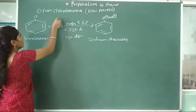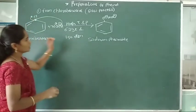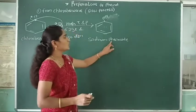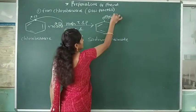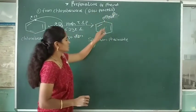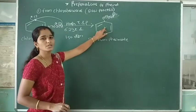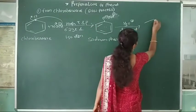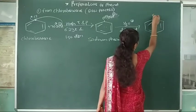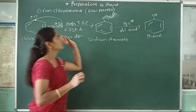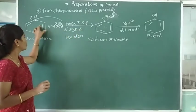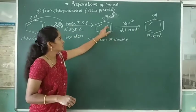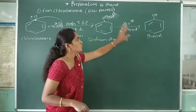The chlorine is replaced and sodium phenoxide (O⁻Na⁺) is formed. This sodium phenoxide is then hydrolyzed in the presence of dilute acid, converting it into phenol. So in the Dow process: chlorobenzene is fused with sodium hydroxide at higher temperature and pressure to form sodium phenoxide, and this sodium phenoxide is hydrolyzed in dilute acid to form phenol.